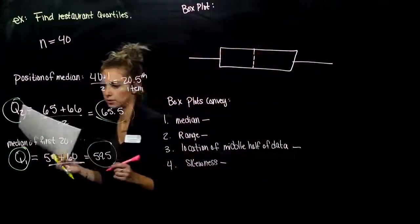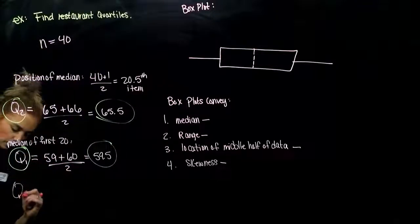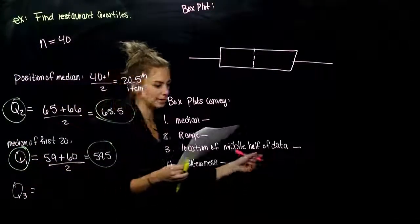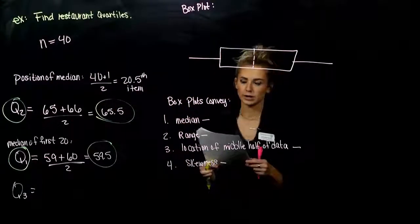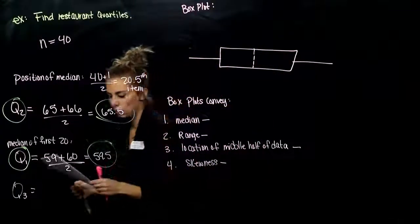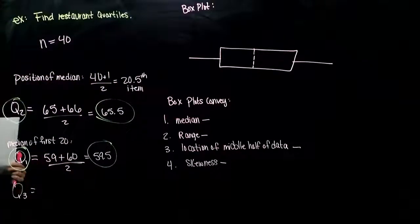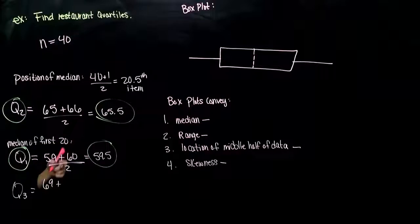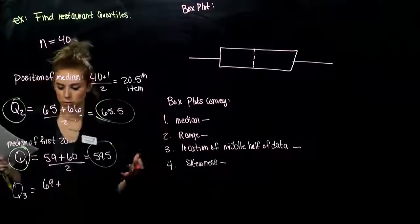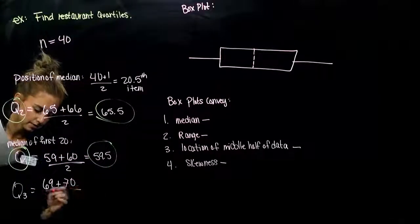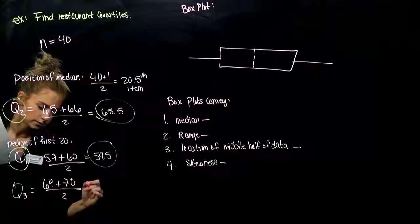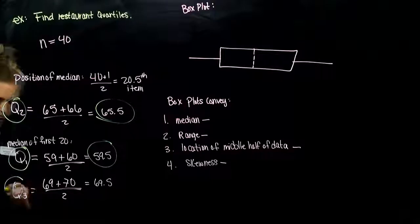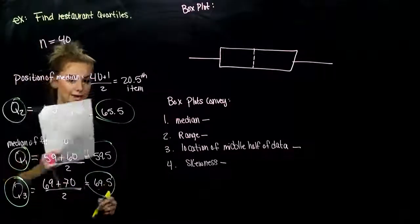For Q3, we're looking for the median of the last 20 data items above Q2. Halfway in between those 20 gives us items at 69 and 70. We want the average, so Q3 equals 69.5.